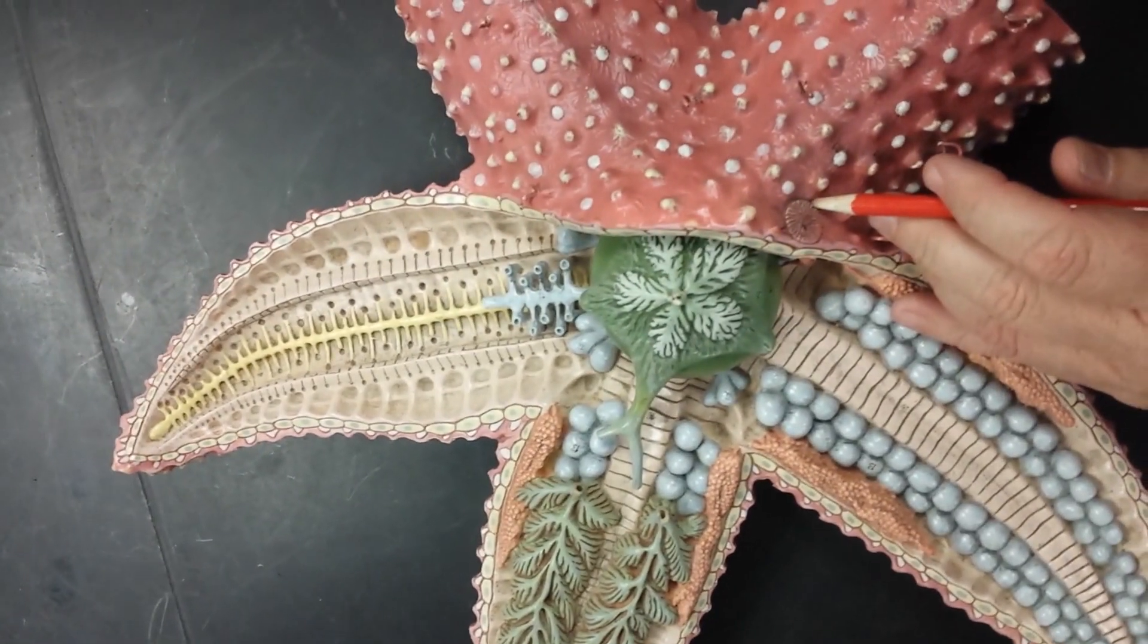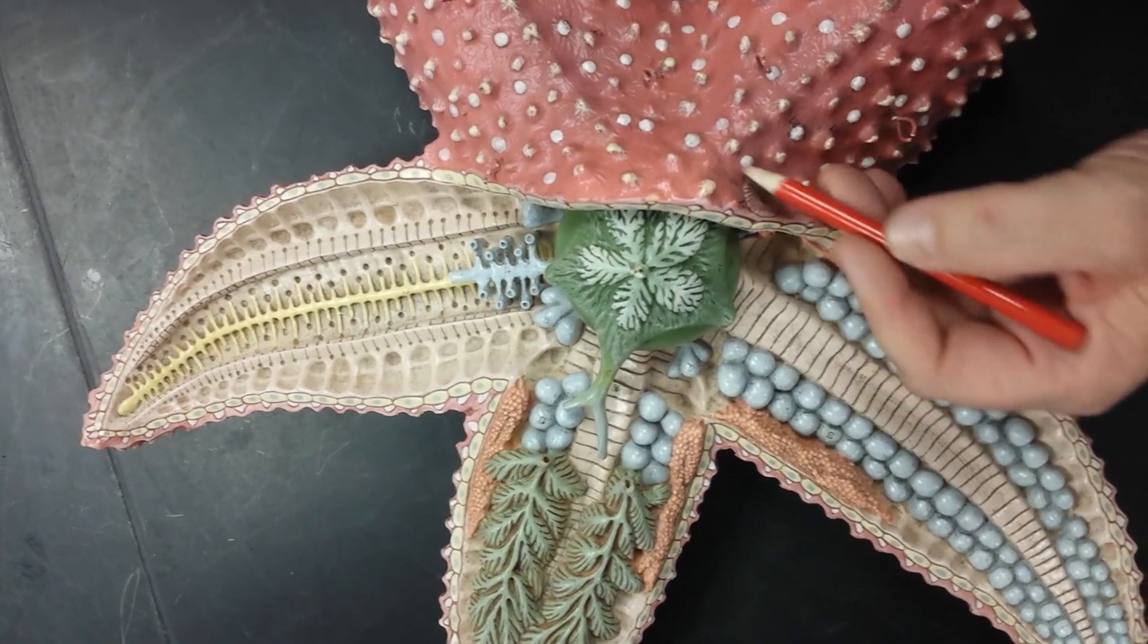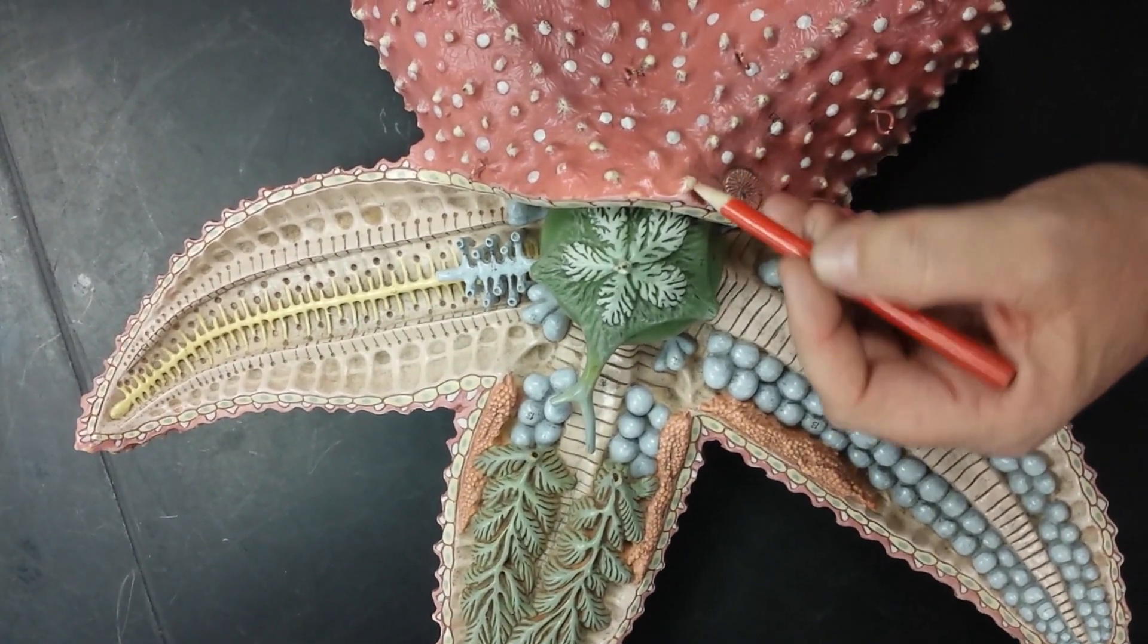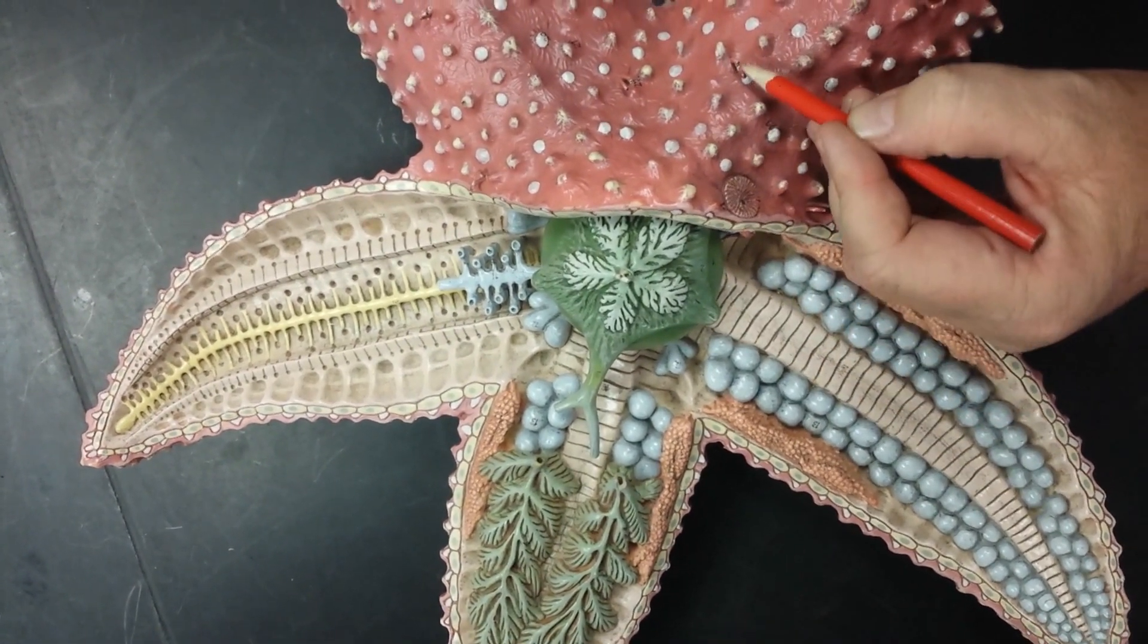Here we're showing the madreporite plate, dermal branchia. Here we have spines, and these are pedicellariae.